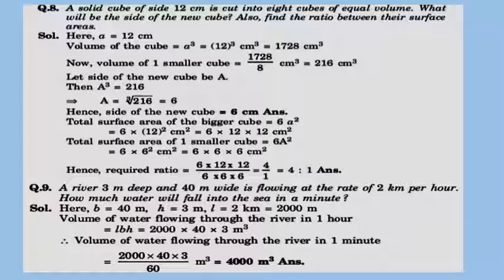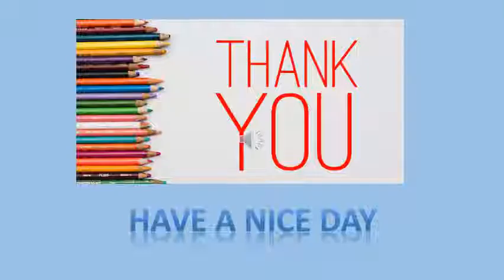A river 3 m deep and 40 m wide is flowing at the rate of 2 km per hour. How much water will fall into the sea in a minute? Breadth and height are given; length is 2 km = 2000 m (since 1 km = 1000 m). Volume of water flowing through the river is L × B × H. To find the volume per minute, divide by 60. The answer is 4000 m³ per minute. Thank you dear students, have a nice day.